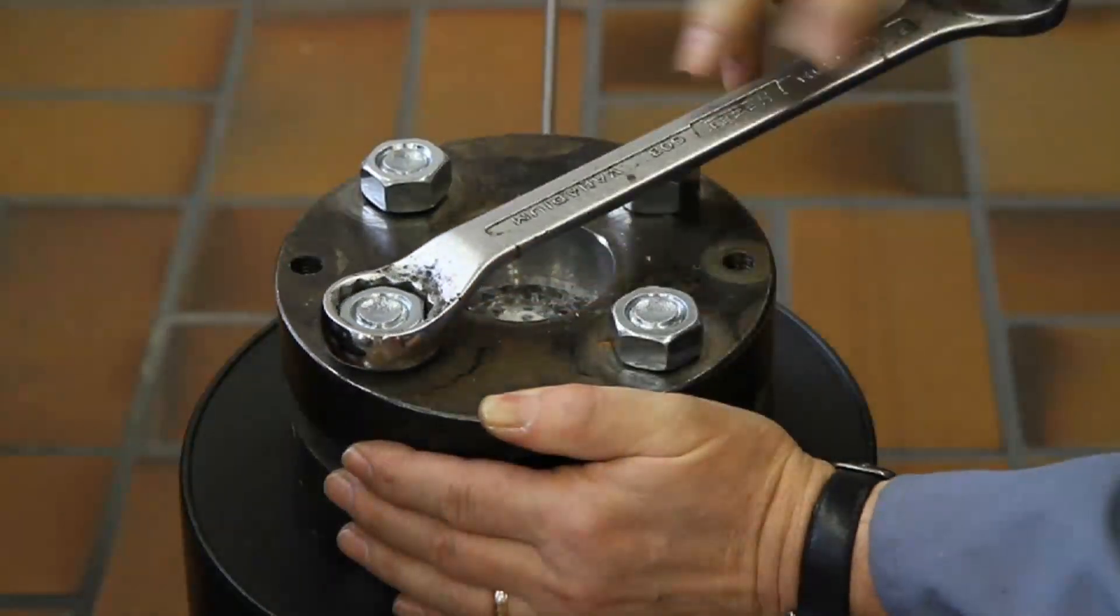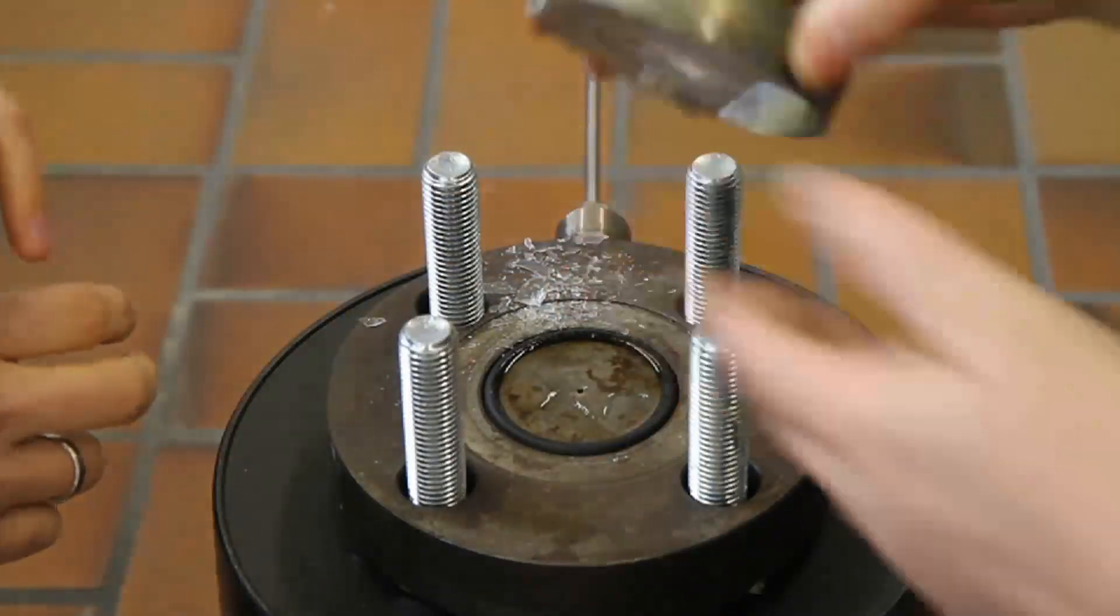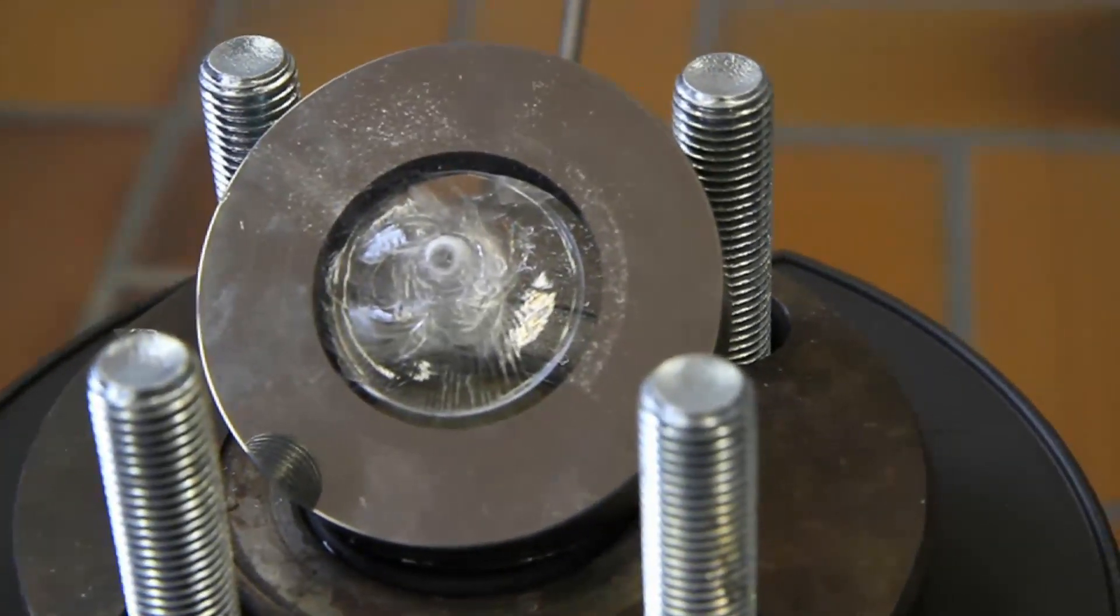With the pressure off, the nuts are removed and the test fixture is disassembled. Look at this remarkable sight glass. There are cracks on the surface, but the integrity of the glass has not been compromised.